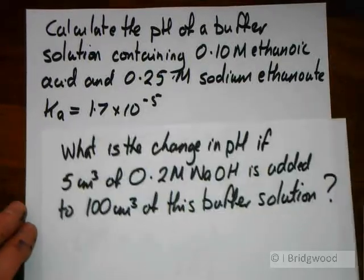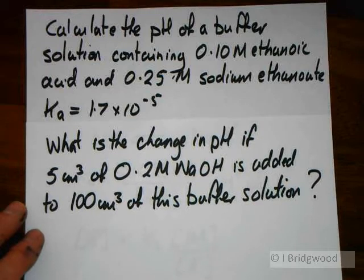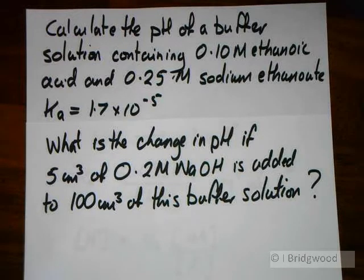Now let's just add to that calculation and say what is the change in the pH if we add 5 cubic centimeters of 0.2 molar sodium hydroxide to 100 cubic centimeters of this buffer solution.